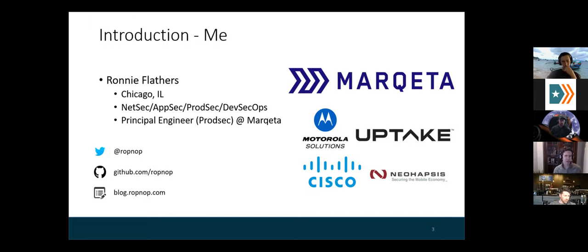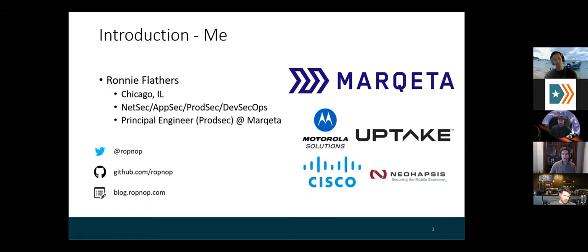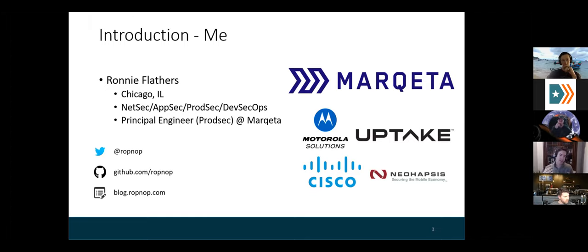After doing that for several years, I switched gears and went more into the defensive engineering side. I took a lot of those skills I picked up as an offensive security person, but then joined companies like Uptake and Motorola to help them build out their internal security capabilities with application security and security engineering. Currently that's what I do at Marketa. Our product security team is responsible for ensuring that all the applications and the code that our developers and engineers create is secure — through training, automating tools, detection, writing custom scanners, and response when vulnerabilities are identified.